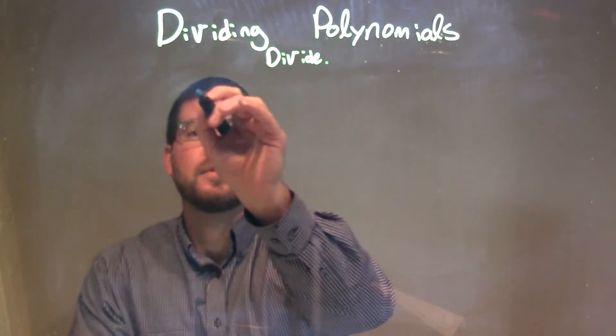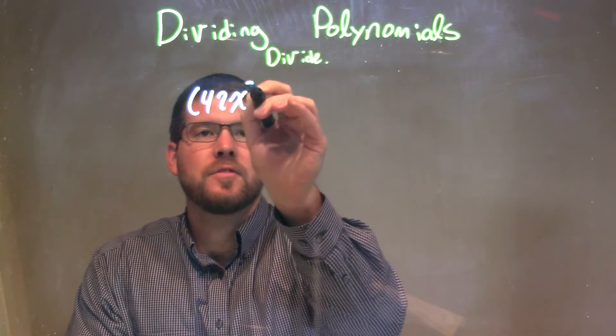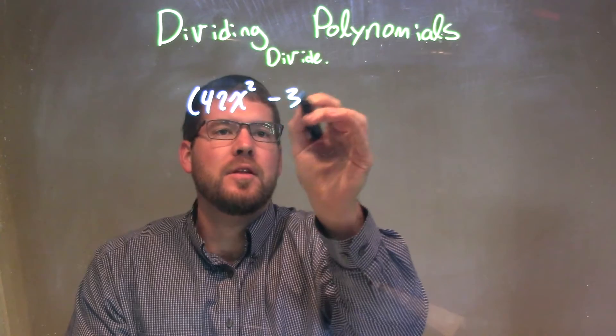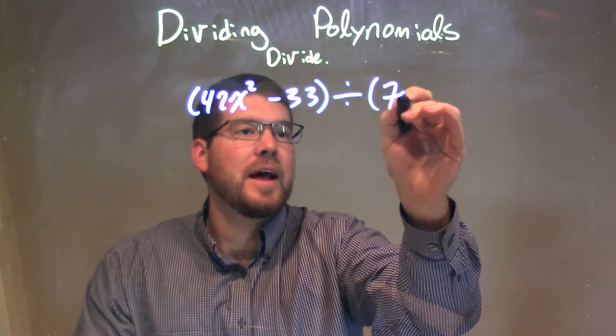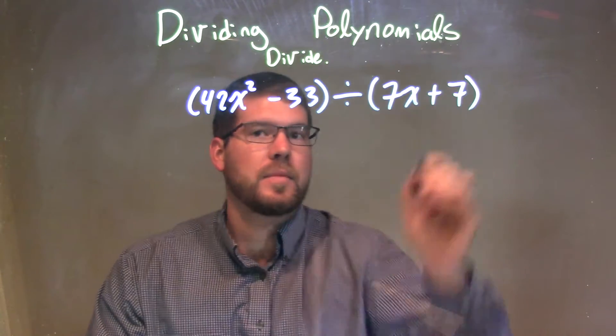So if I was given this problem, 42x squared minus 33 divided by 7x plus 7.